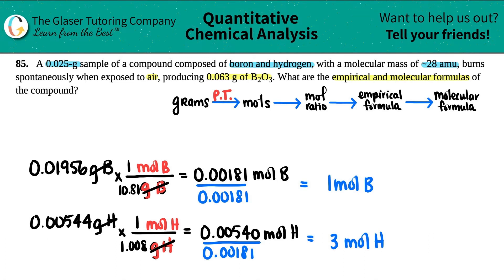Now what's left is the empirical formula. All you have to do since we have the whole numbers, one and three, you just combine them and you get your empirical formula. So for right now, my empirical formula would just be B1, but you don't have to put a one there, H3. So that part's done.